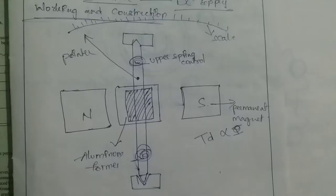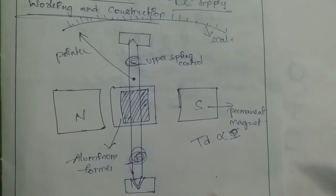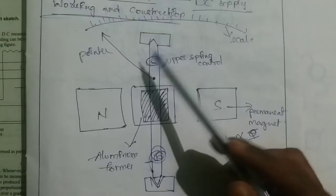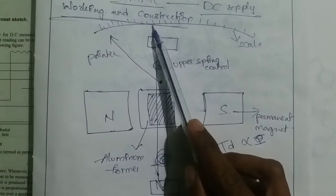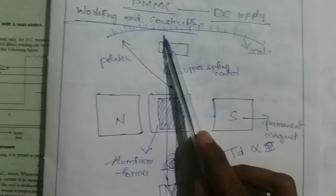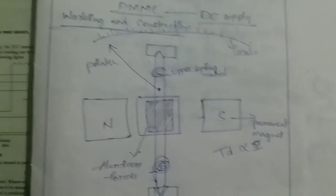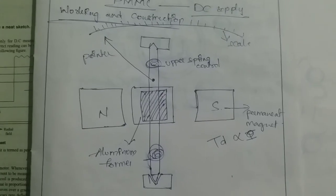So here the current flow produces the deflection torque. Now we have to use a controlling torque. So now Td equals Tc, and then we reach the rest position.